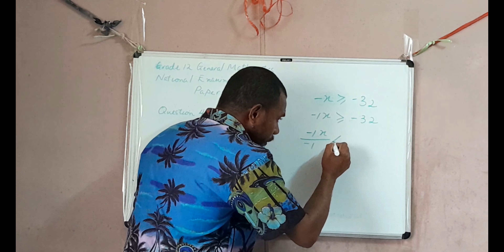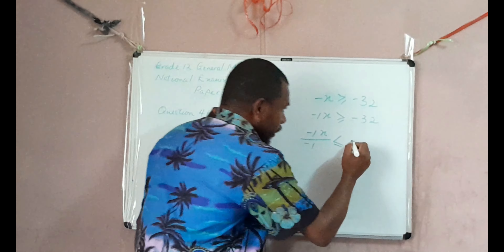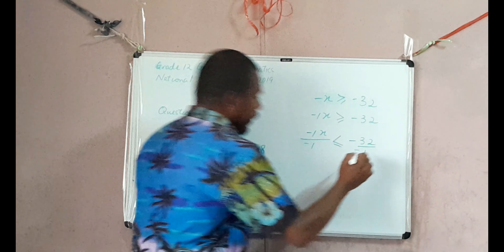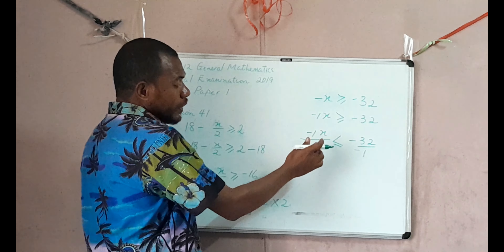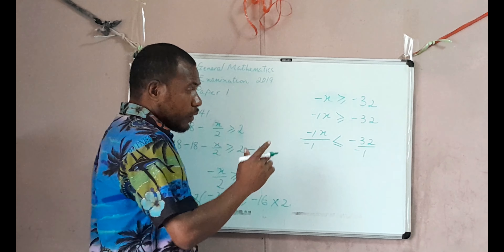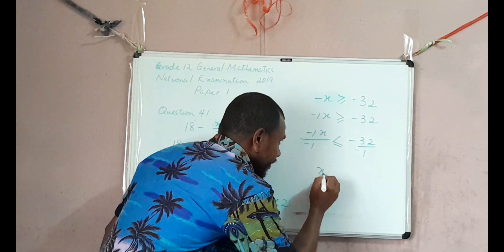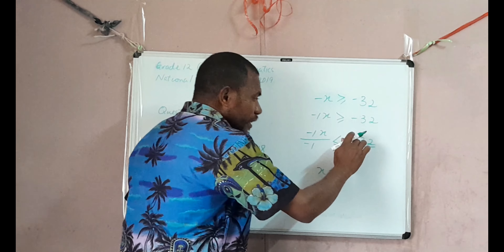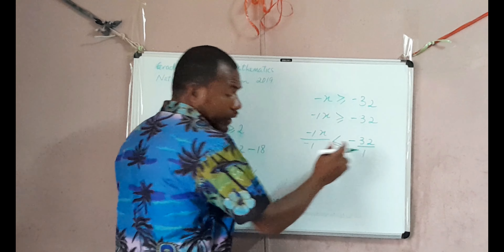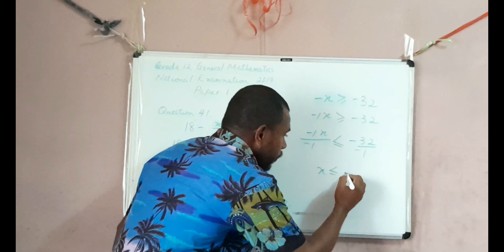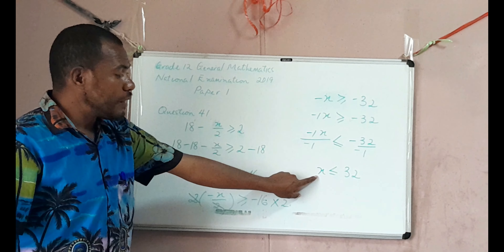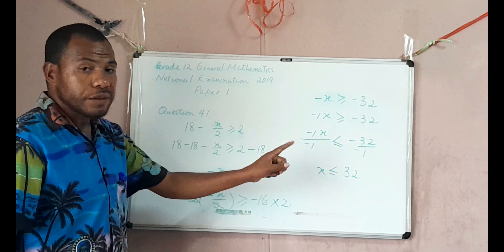It becomes less than or equal to negative 32 on negative 1. Negative 1 divided by negative 1 is positive 1, so positive 1 times x is x, which is less than or equal to negative 32 divided by negative 1. The answer is positive 32. So the value of x is less than or equal to 32.